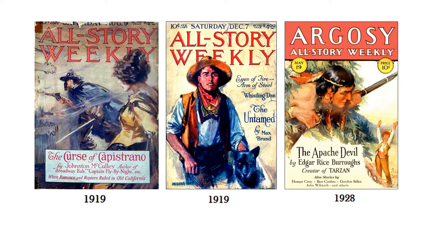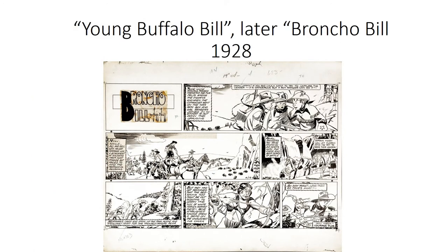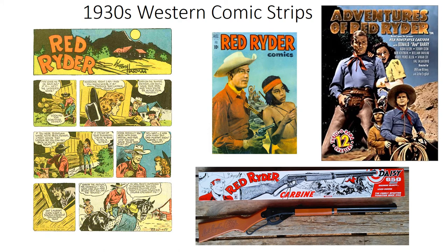The next step in the development of comic books after pulp fiction was the comic strip, which developed around the same time. In 1928, we saw the very first comic strip with a Western theme. Initially it was called Young Buffalo Bill, but later changed to Bronco Bill, and that ran for many years. In the 1930s several others appeared. When we were talking about Native American representation, we looked at two comic strips that started in 1938 — one of them was The Lone Ranger, and the other was Red Rider, which was really big back in the 20th century.